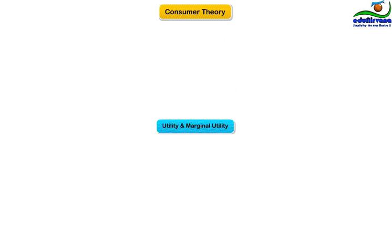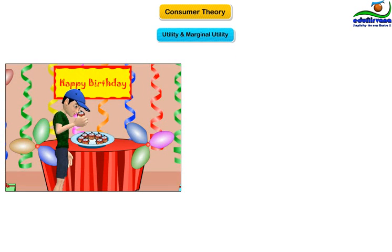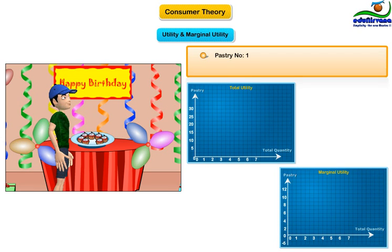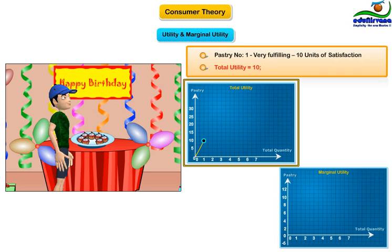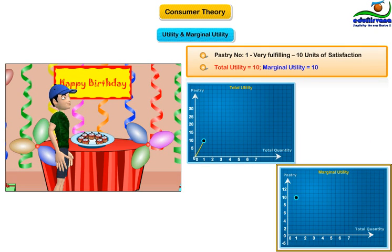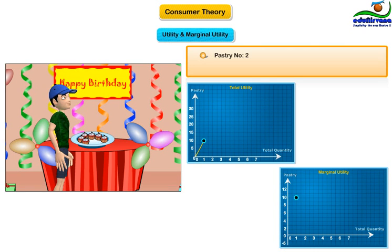You loved pastry number one because you were hungry and the pastry really hit the spot. You had an appetite for sweets, so it was very fulfilling. It added 10 satisfaction units to your overall sense of well-being. So the total utility was 10 and the marginal utility was also 10, because it was your first piece. Pastry number two was good but not as good as pastry number one, because your hunger and need for sweets was already partly fulfilled.